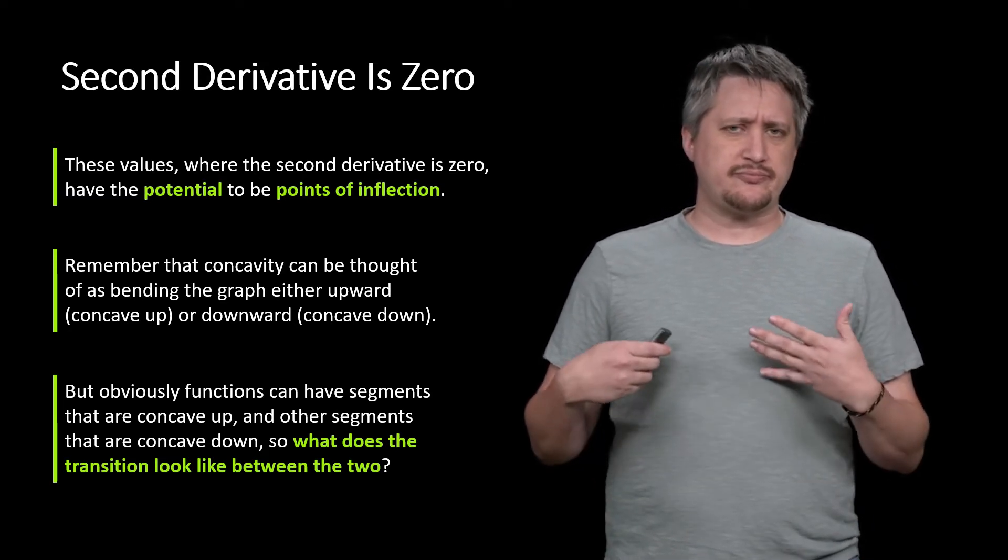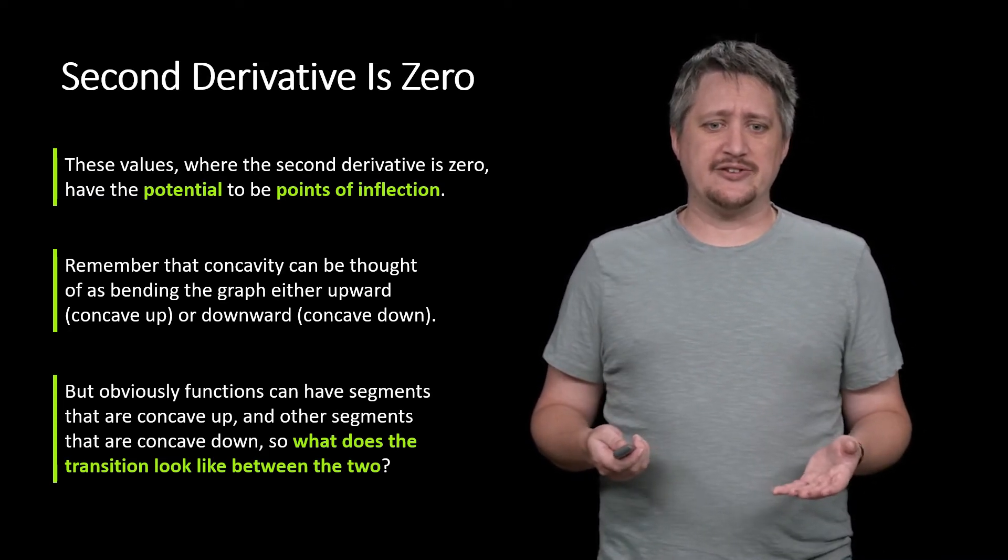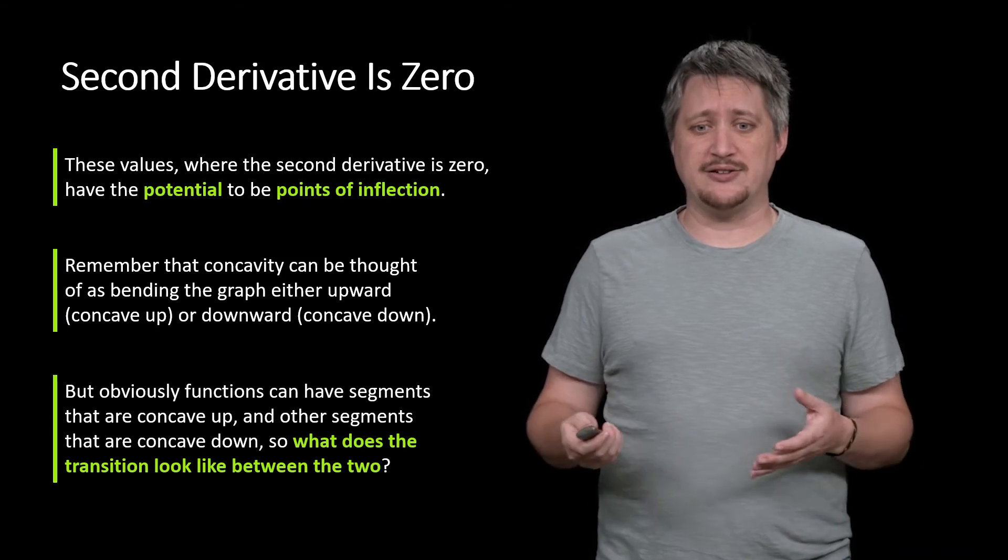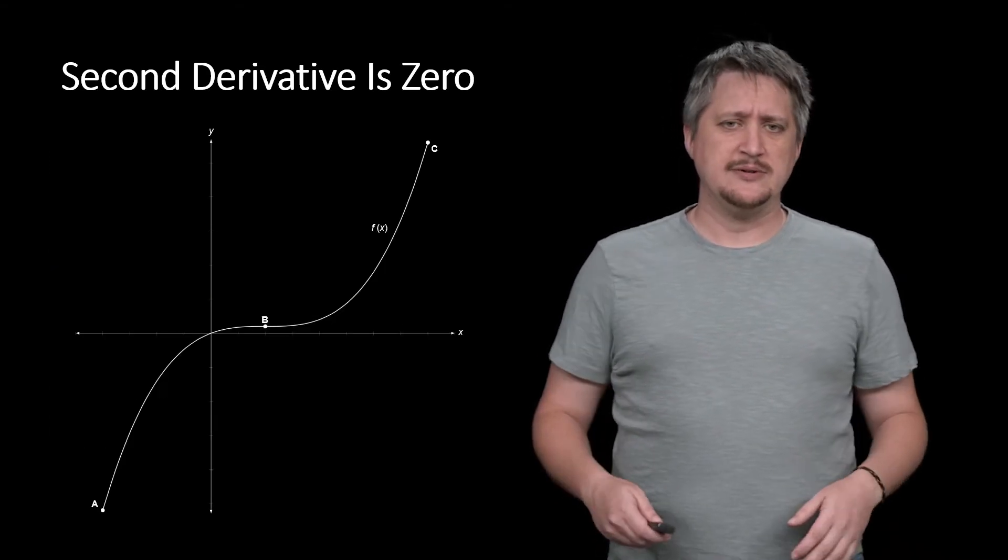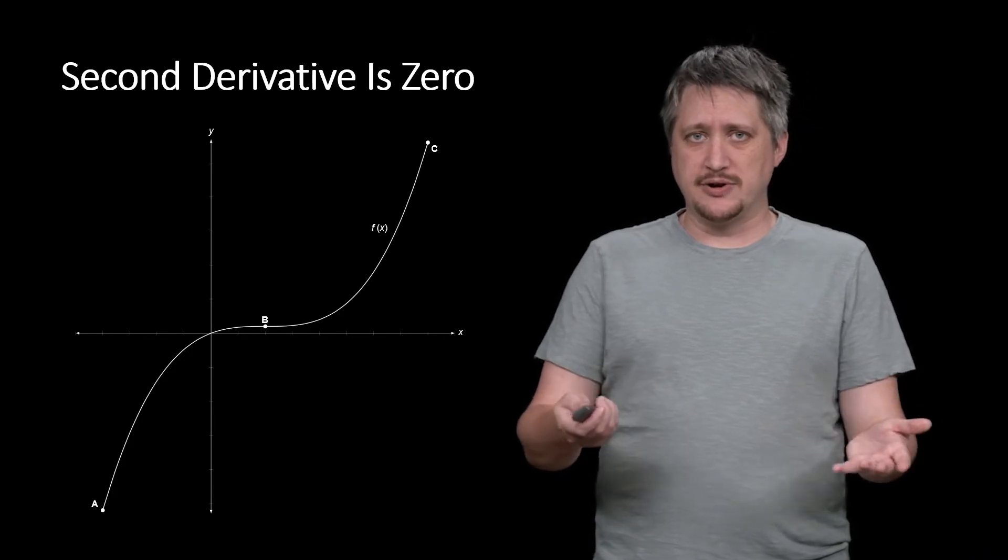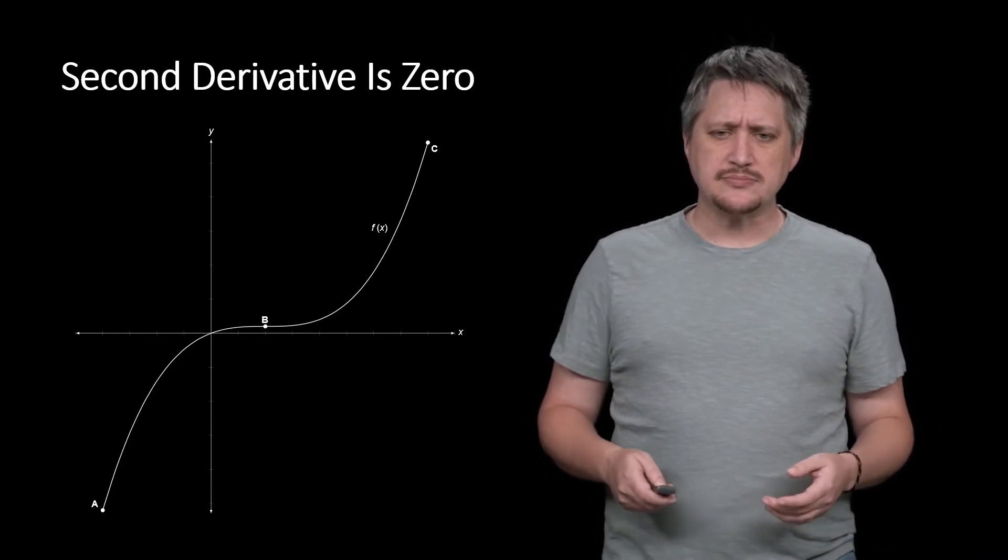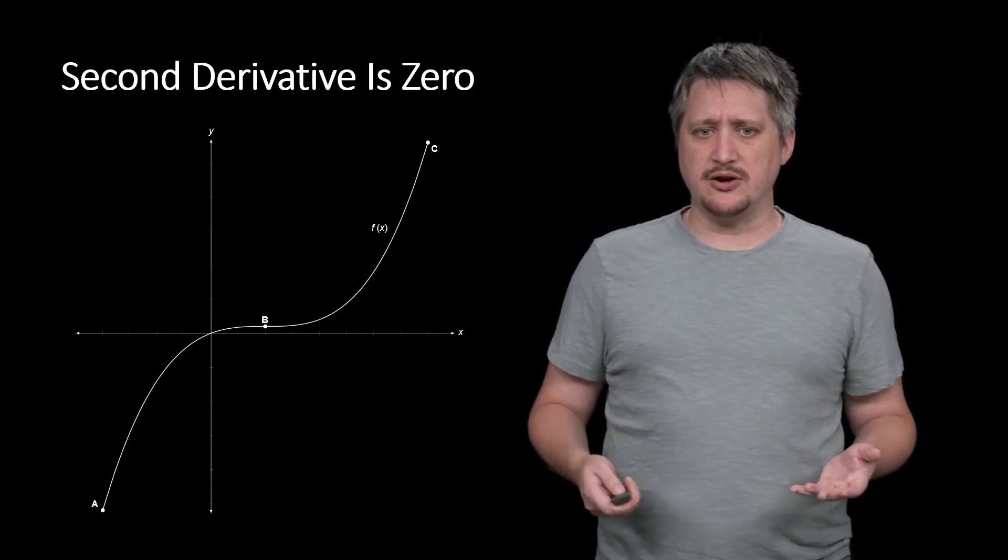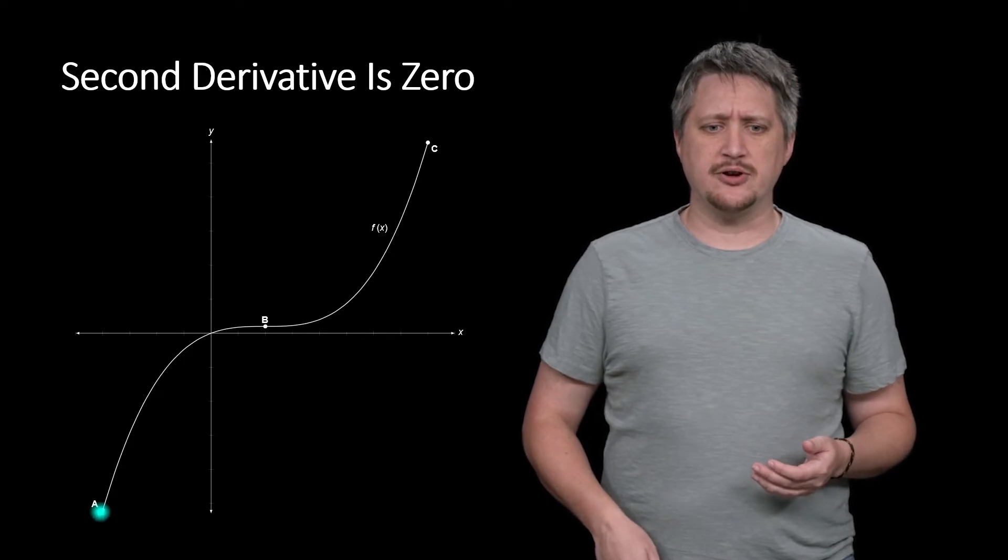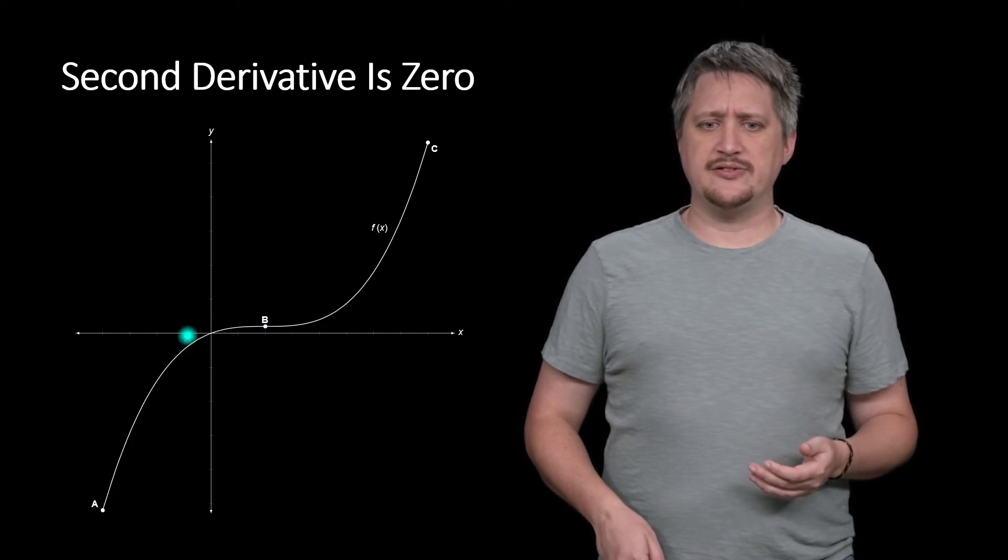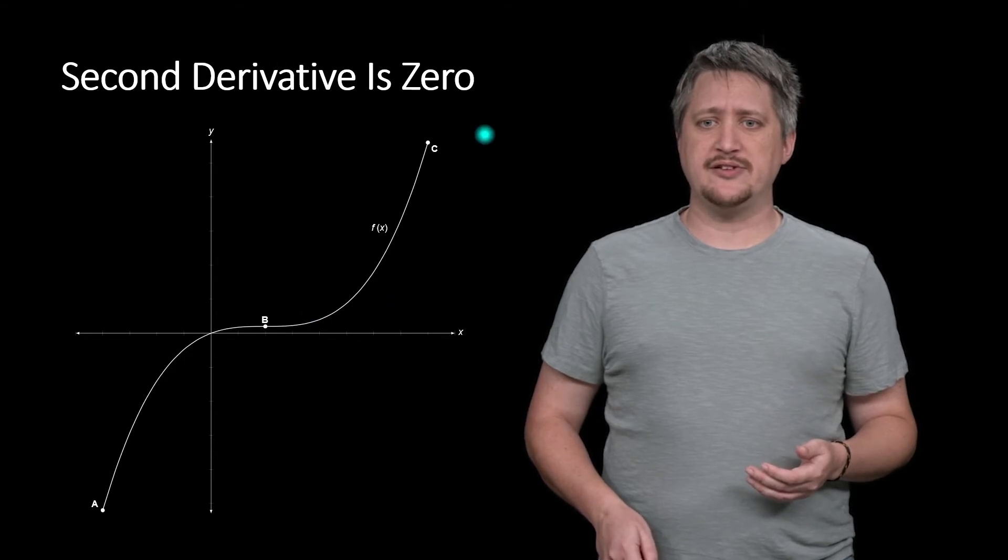And somehow you have to go from one to the other. So a natural place to start is to ask yourself, what does the transition look like between those two things? Taking as an example a sketch of a graph here, we have a segment that is concave down. So going from A to B, this is downward concavity. And going from B to C, this is an upward concavity.